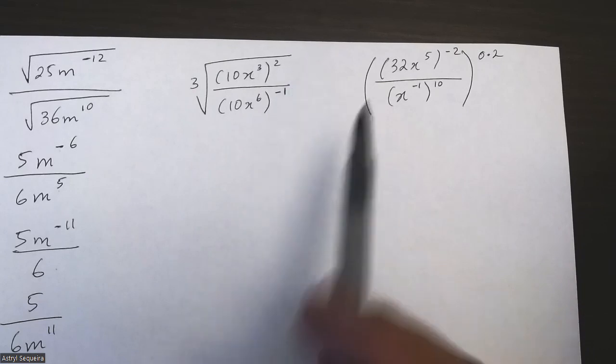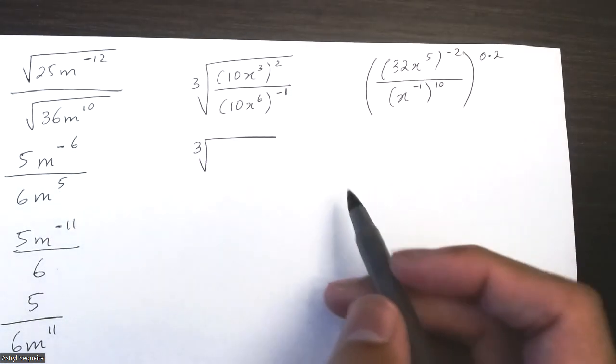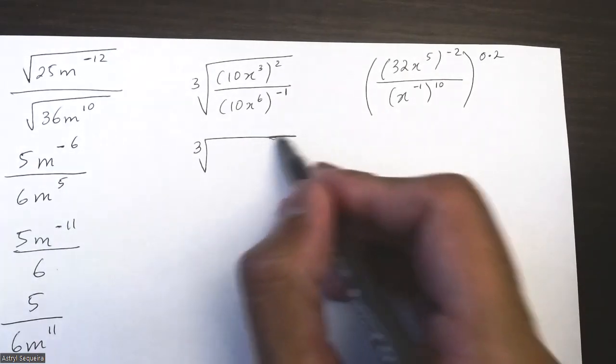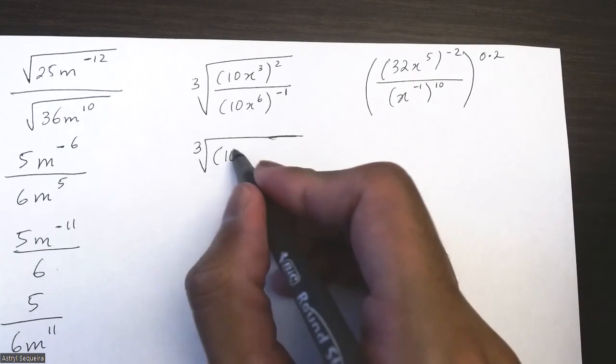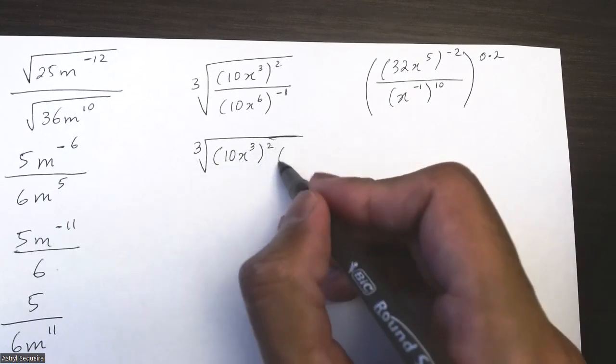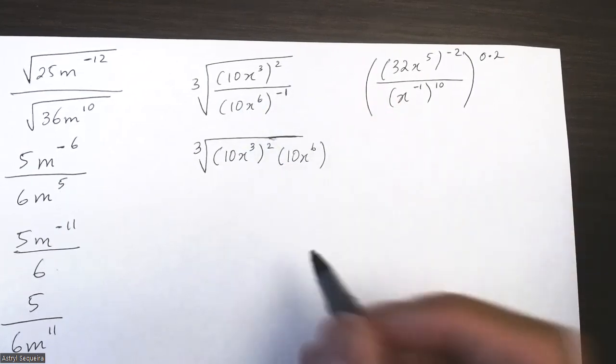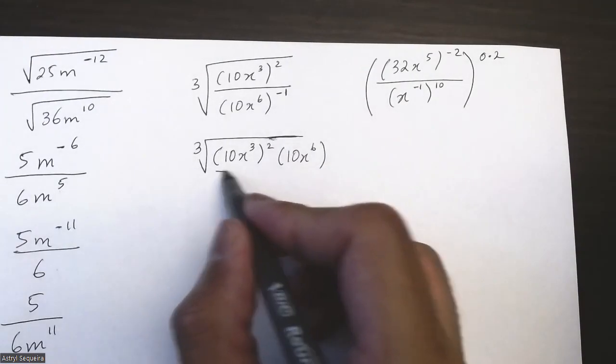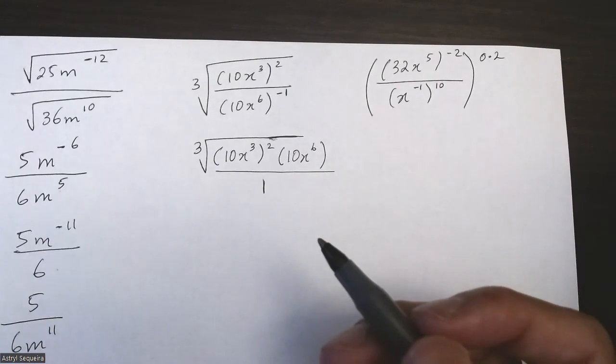The first thing I'm going to do is I'm going to move this to the numerator, and since there's going to be nothing left in the denominator, basically it's just a one left. I'm not going to rewrite my denominator after that. So when I move this to the top, the exponent just becomes positive one, which I don't even have to write.